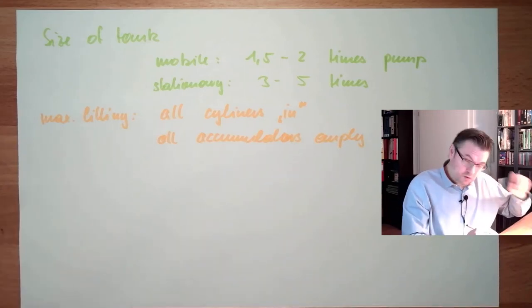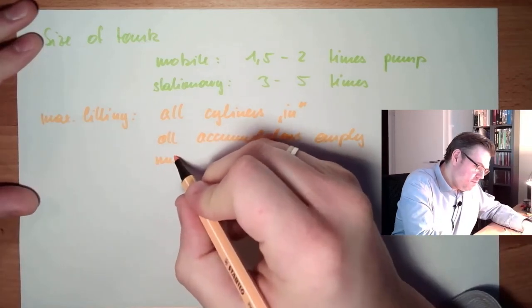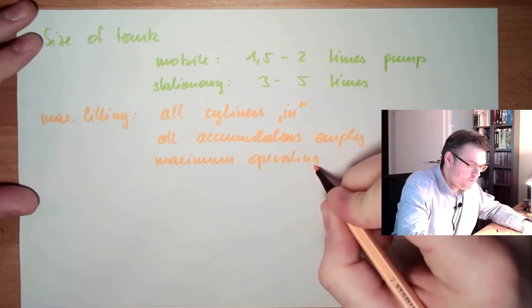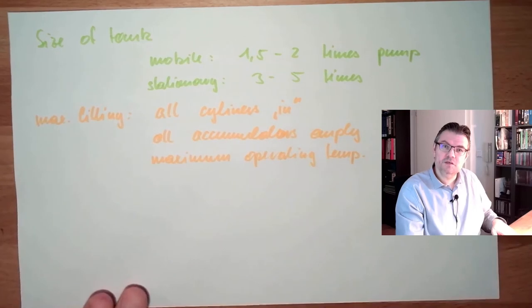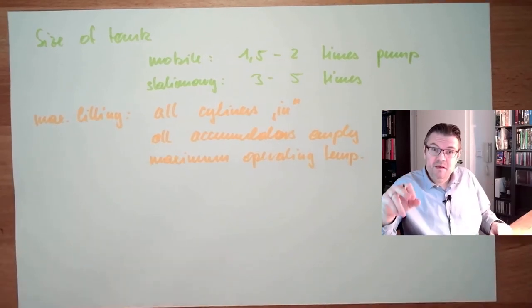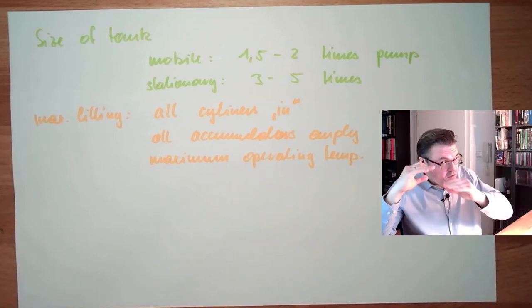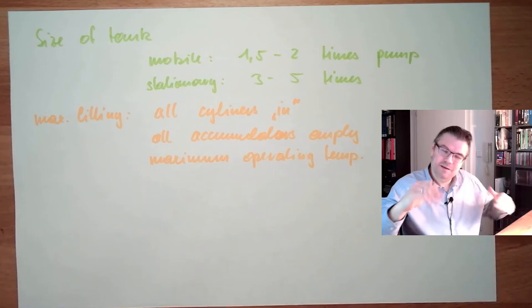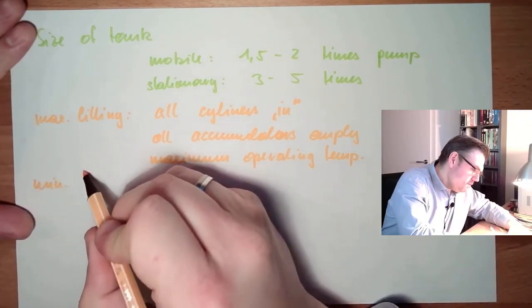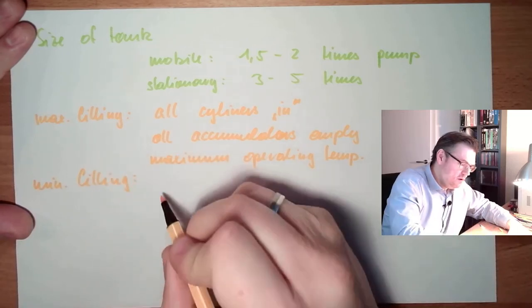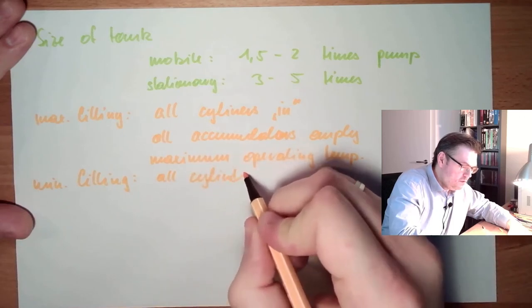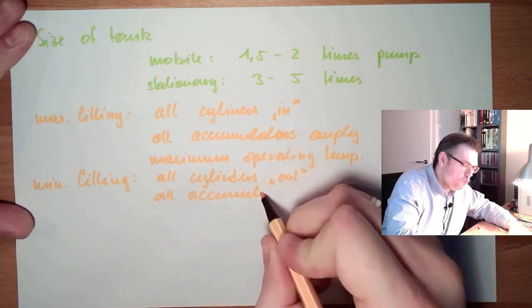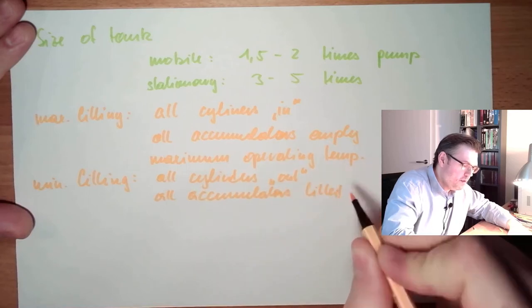Also all accumulators empty, and maximum operating temperature. If these conditions are met, I have the maximum filling. At maximum filling, the tank should still have some reserve, should not look like an infinity pool. Minimum filling is the opposite: all cylinders out, all accumulators filled, and minimum operating temperature.